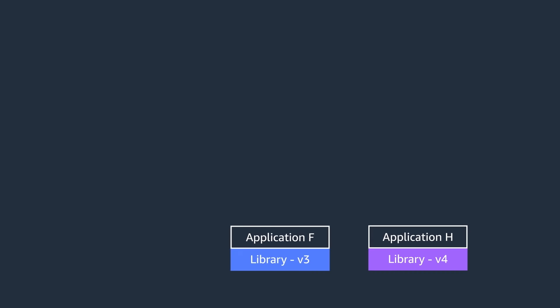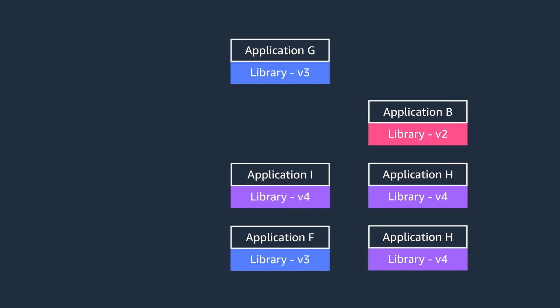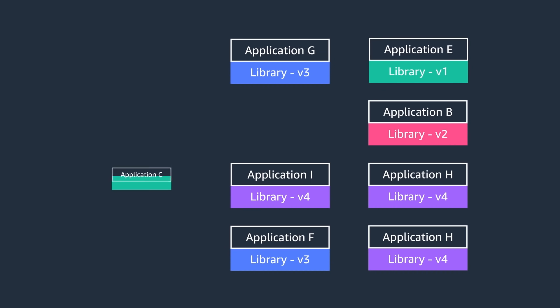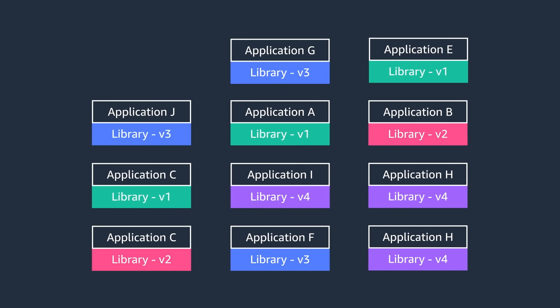You could implement circuit breakers by yourself or using any library in the market. However, when you scale to hundreds of applications, the changes in your code and configurations could become really challenging. A better option could be letting a service mesh handle the circuit breakers for you. A service mesh is a software layer that can handle all the communications for your services. It has features like circuit breakers, health checks, and retries.